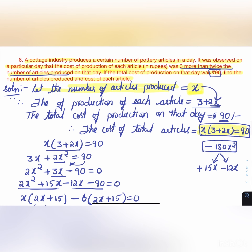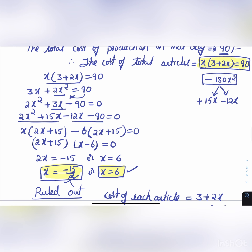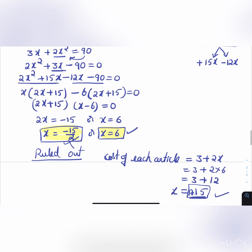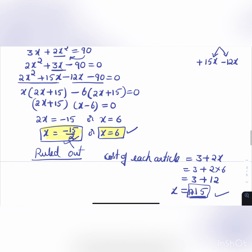The number of articles produced is 6 and the cost of each article is ₹15. 6 × 15 = 90. So our answer is correct. Thank you for watching.